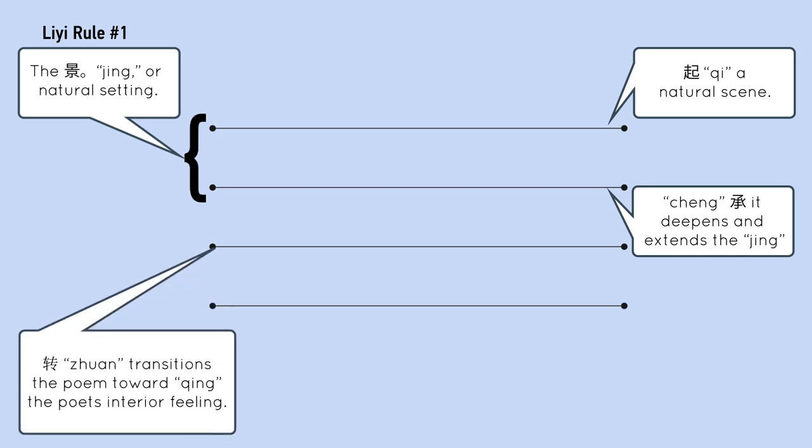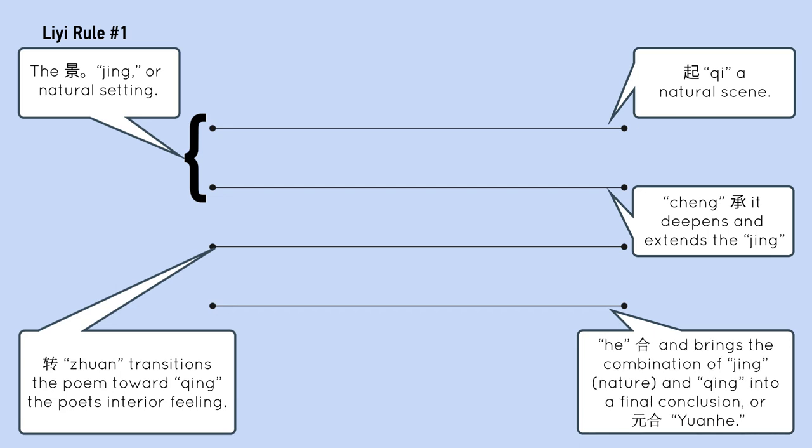The third line is called Zhuan, and it transitions the poem toward Qing, the poet's interior feeling. The fourth line is called He, and it brings and combines the Jing, or nature, and Qing feeling into a final conclusion, or Yuanhe.